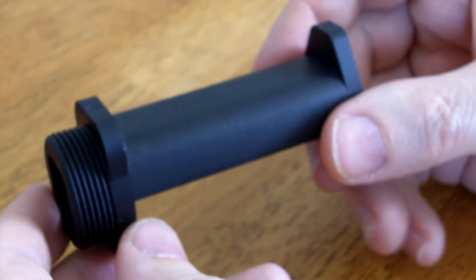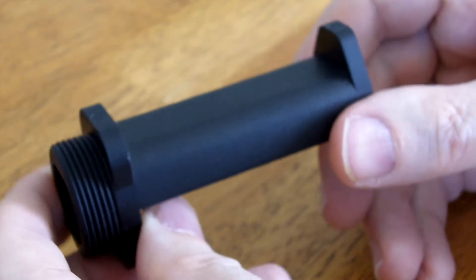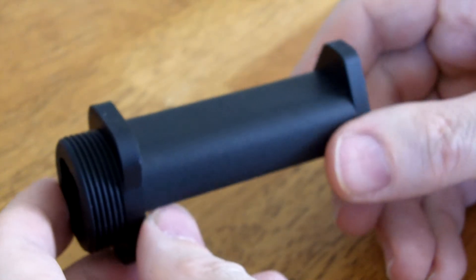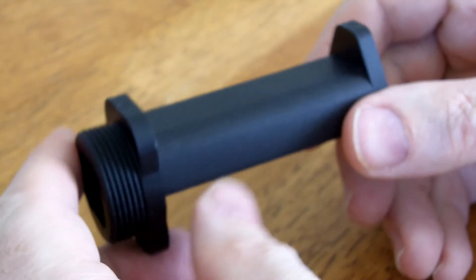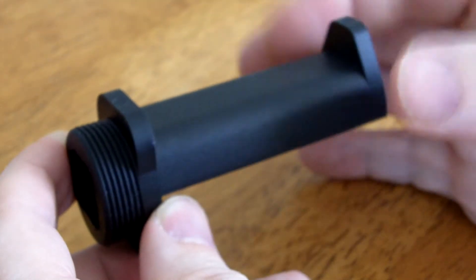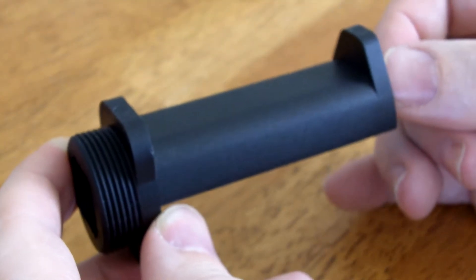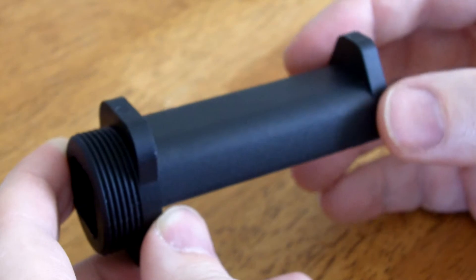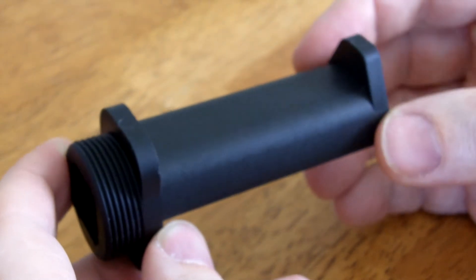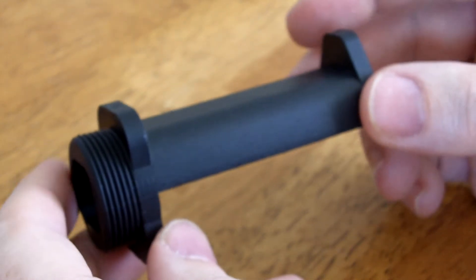Hi there. So this right here is the stock Monoprice Maker Select spool arm, and it's fixed. It's too short really to hold my Hatchbox filament or some other types of filament spools. So I want to make an adapter for it.